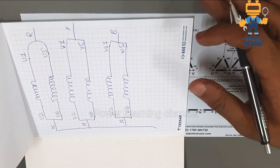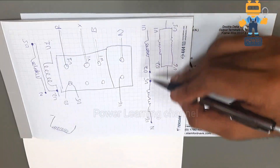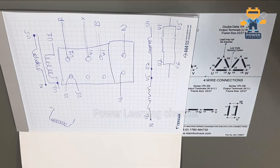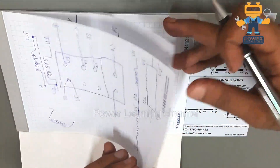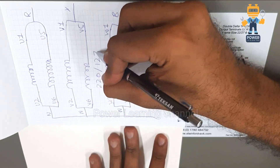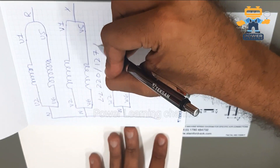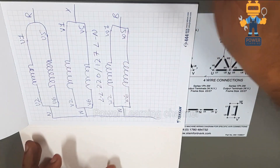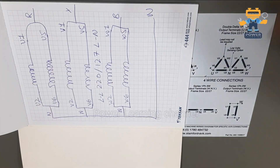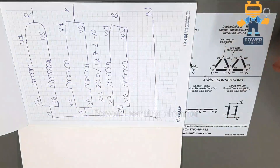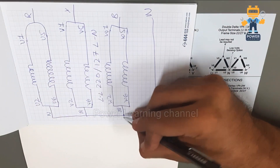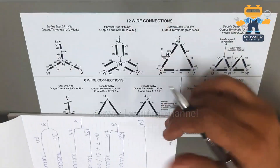With parallel star configuration you get 220 volts line to line and 127 volts line to neutral. All three neutral ends are connected at one common point. Four wires go to the breaker — three phase wires and one common neutral wire taken from that single star point.